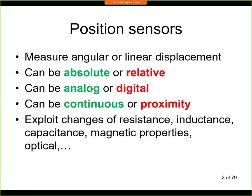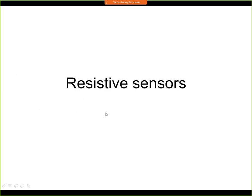All the sensors will exploit different physical properties — it may be the change of electrical resistance, change of inductance, capacitance, magnetic properties, and so on. Today we will see the change of resistance and the change of inductance; other properties will be discussed in next lectures. Remember that all sensors we will see today will be absolute sensors, analog sensors, and continuous sensors.